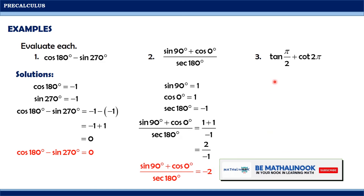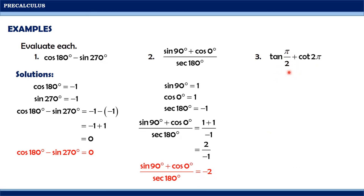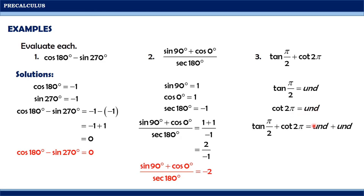Finally, on our last example, we have tangent(π/2) plus cotangent(2π). Since we have angles in radian measure, it is easier to convert them to degrees. π/2 equals 90 degrees, and 2π equals 360 degrees. Therefore, tangent 90° is undefined and cotangent 360° is also undefined. So by substitution, undefined plus undefined results in undefined.